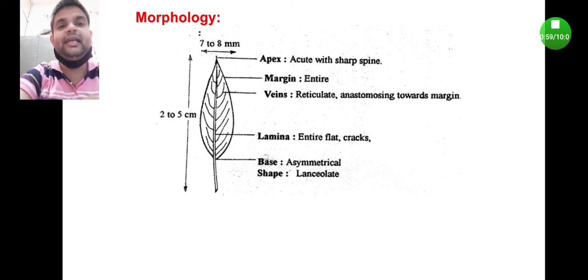The base is asymmetrical. You can find here the lamina part at the left hand side and right hand side attached to the midrib at different junctions - that's why the base is asymmetrical. The shape is known as lanceolate shape.